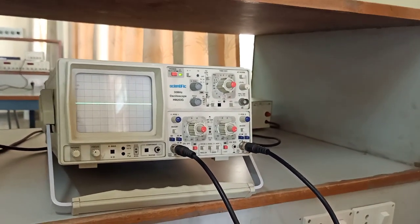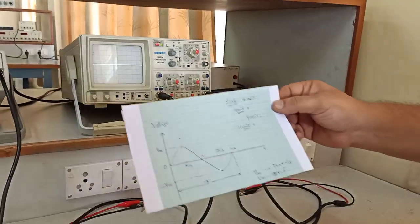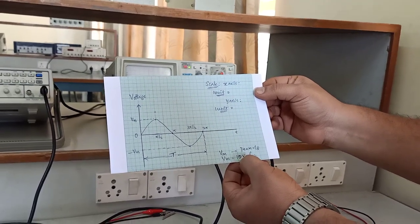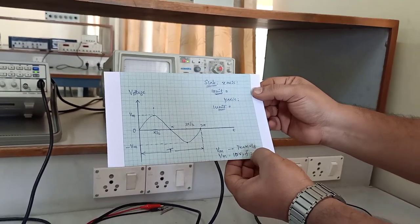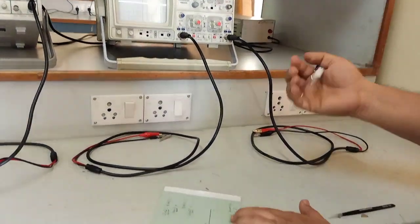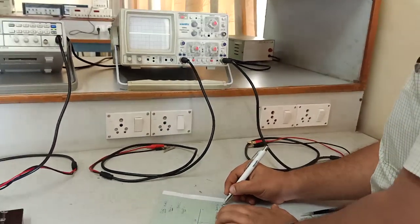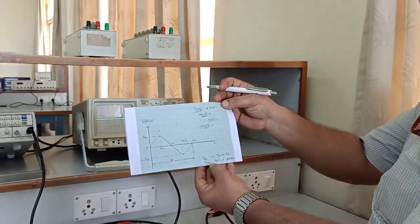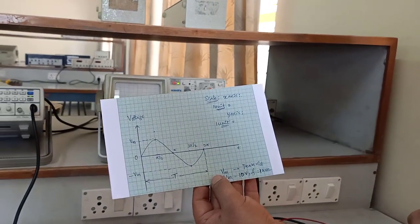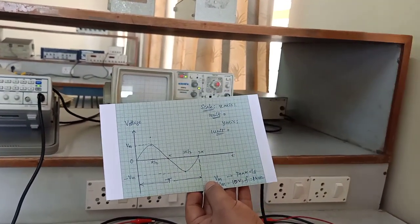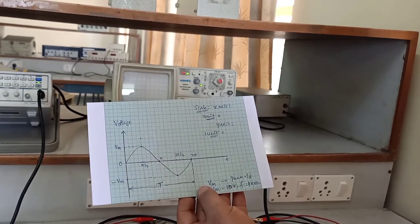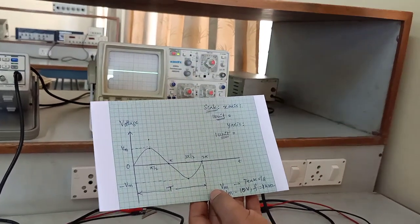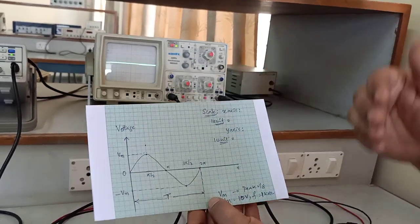Now let us try to visualize a waveform. I will take this as a reference — you can see a waveform written here with a peak voltage of 10 volts and a frequency of 1 kilohertz. So the frequency is set to 1 kilohertz. The frequency is 1 k and the peak voltage Vm — that is the positive peak or negative peak — is equal to 10 volts. Let us try to visualize this on the CRO. I will be requiring the signal generator to generate this waveform and the CRO to view it.